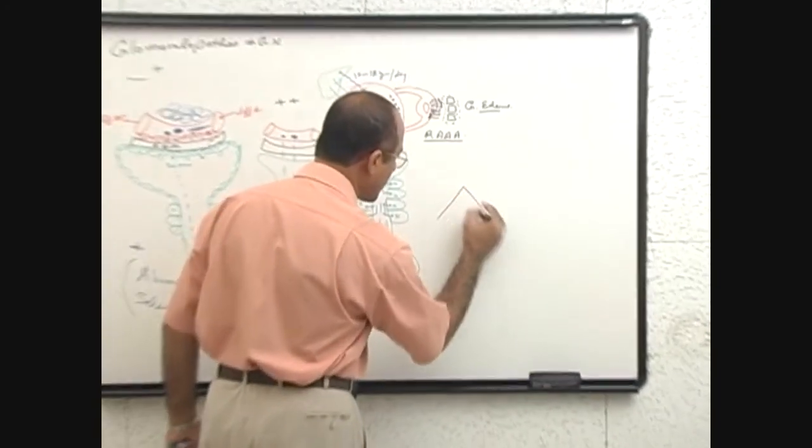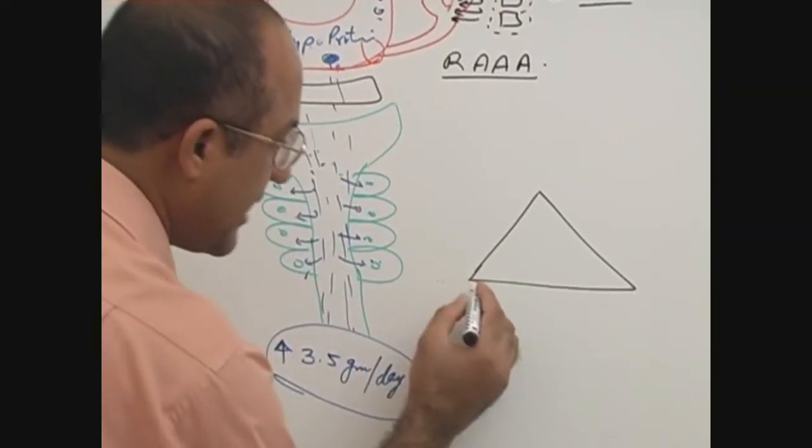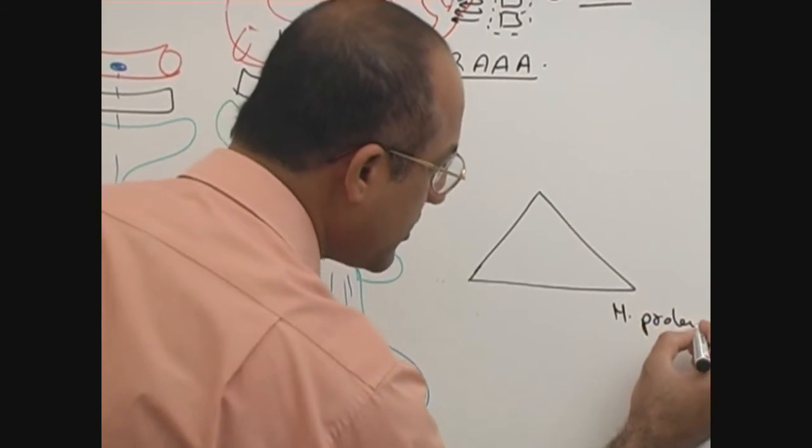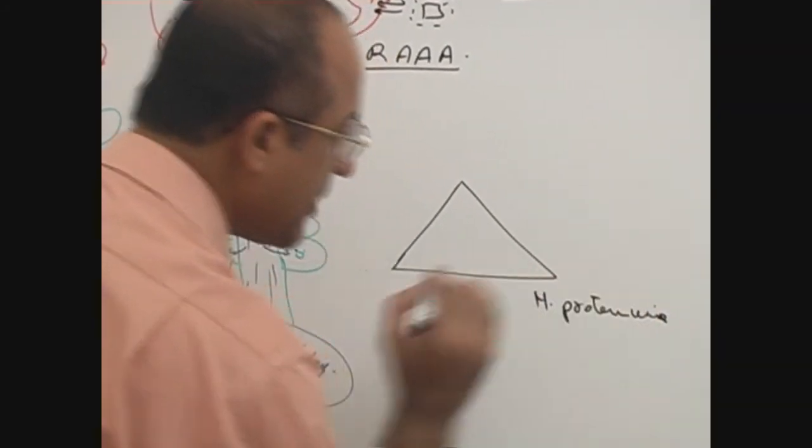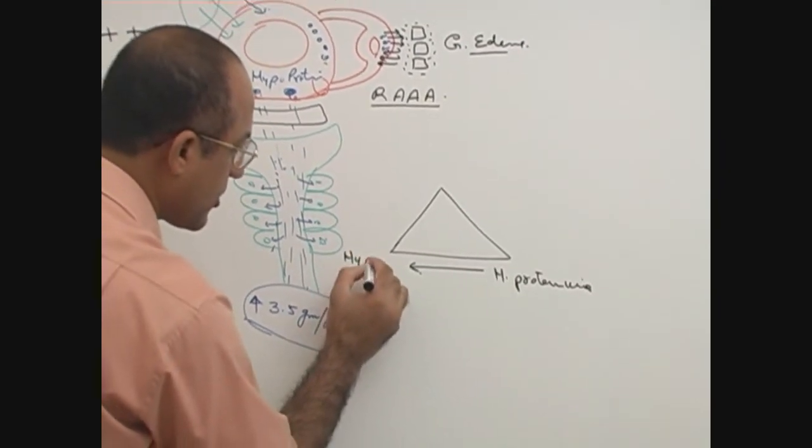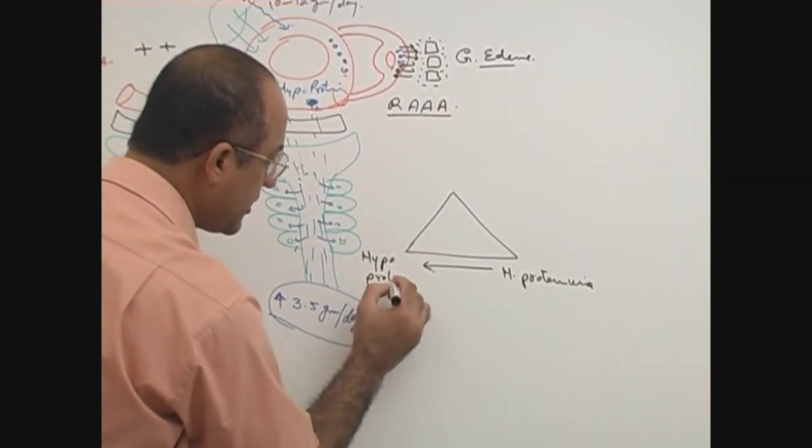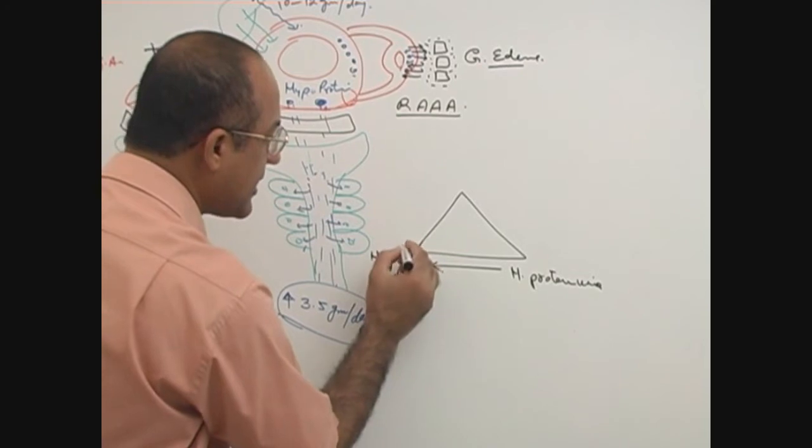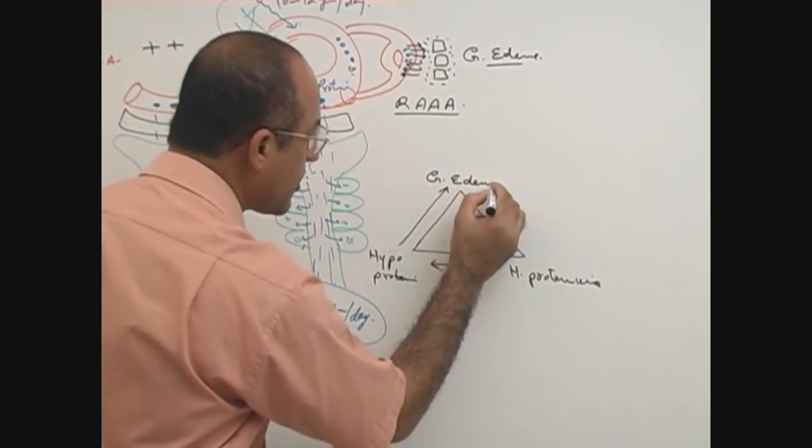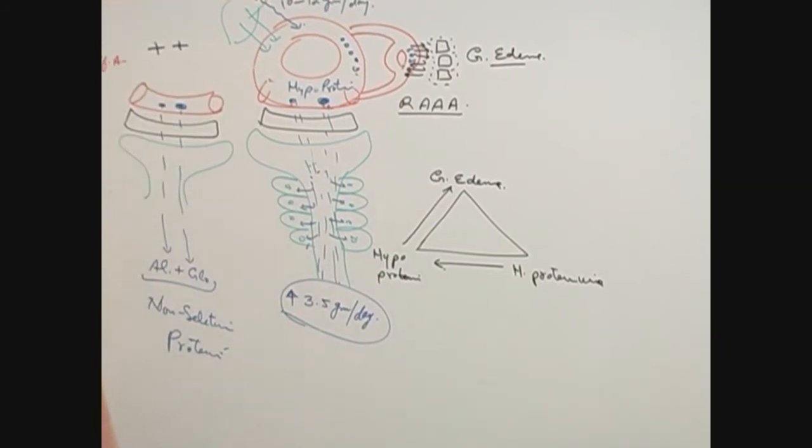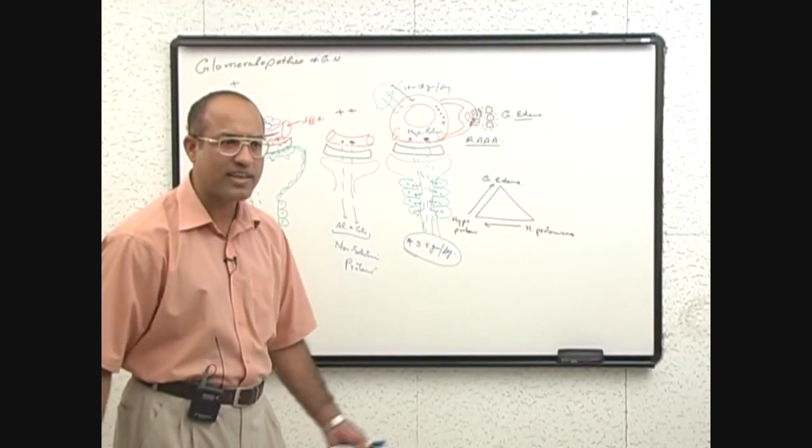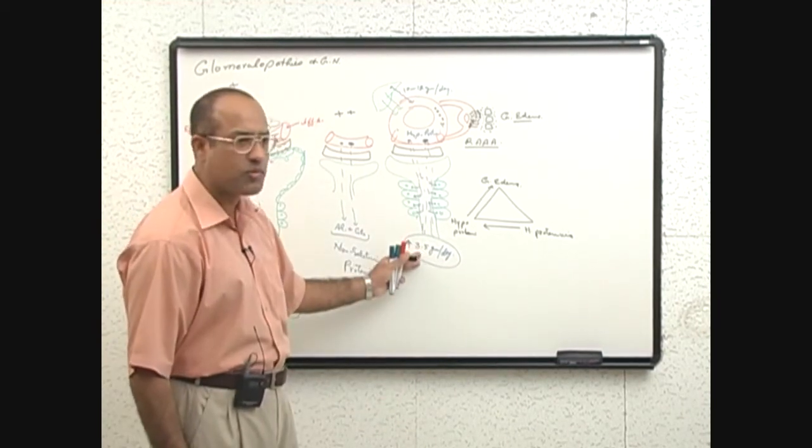So what patient has developed up to now? Let's make a triangle. The patient has developed problem number 1 was heavy proteinuria. That led to hypoproteinemia. And that led to generalized edema. Is it difficult to understand? It is too easy like kid's story, isn't it? You lose the heavy proteins, proteins become less here, it cannot hold the water, so water goes out.